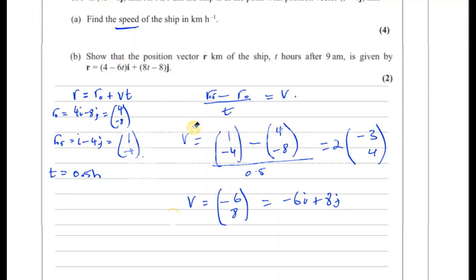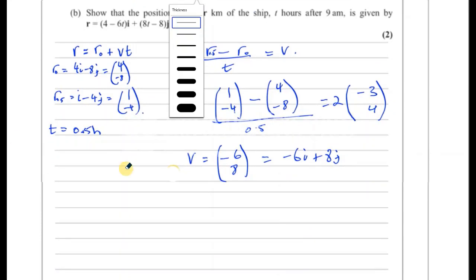So we have here the velocity of the ship at kilometers per hour. But we're asked to find the speed of the ship. That's what we're asked to find. So what we need to do here is to find the magnitude of the velocity. The velocity is a vector quantity, and the speed is a scalar quantity. So we've got to find the magnitude of this velocity.